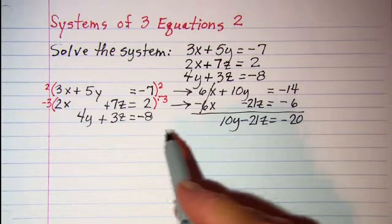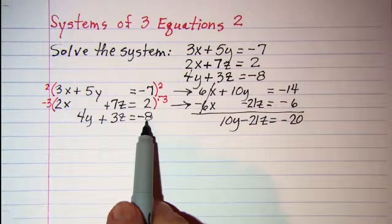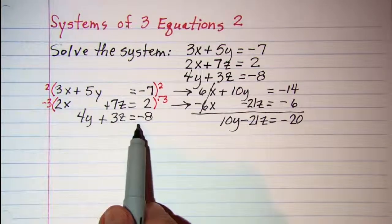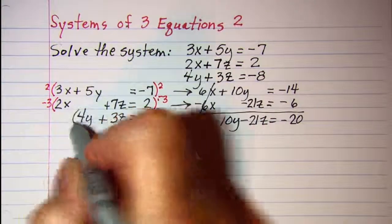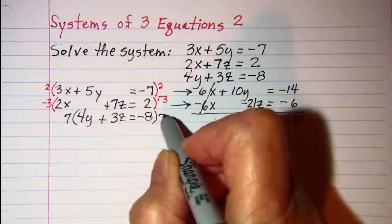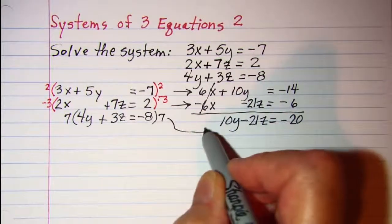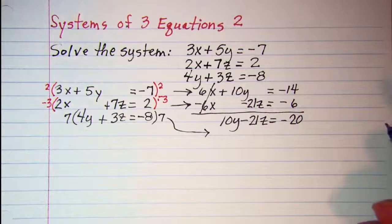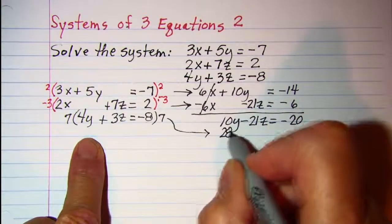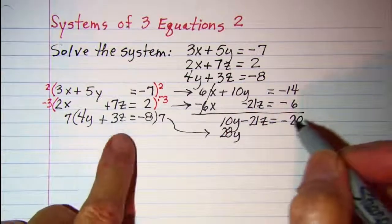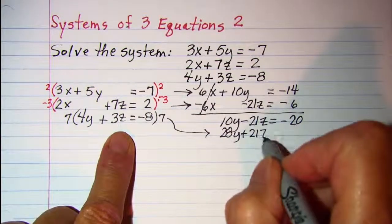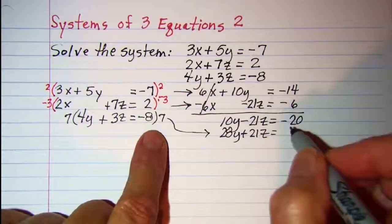Then I can multiply this equation by 7 on both sides. So now I have 28y + 21z = -56.